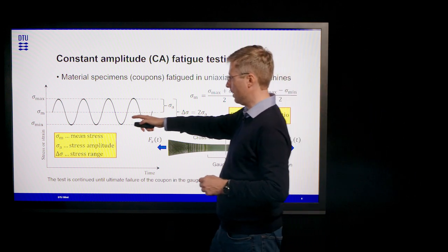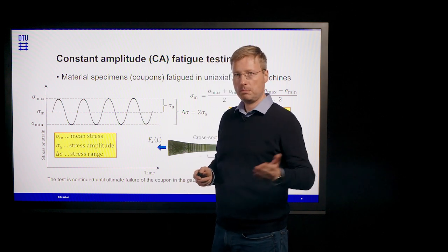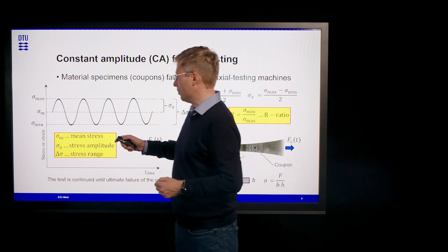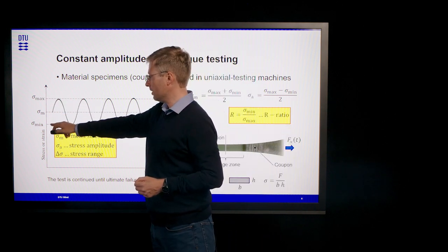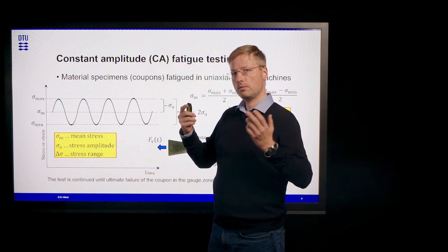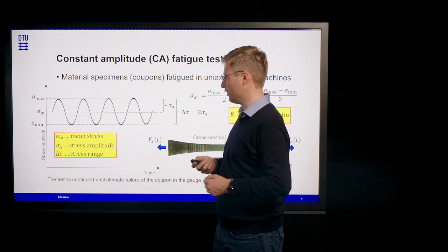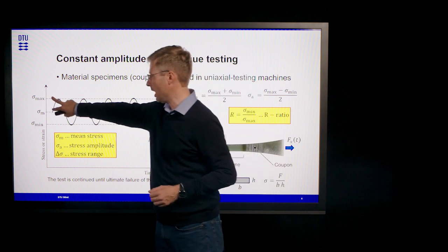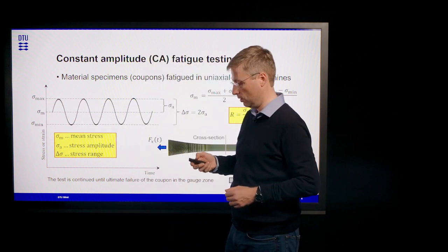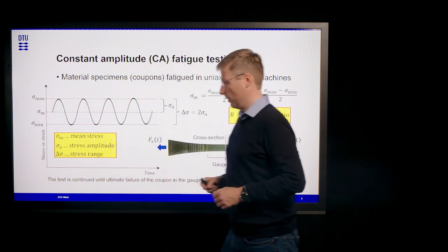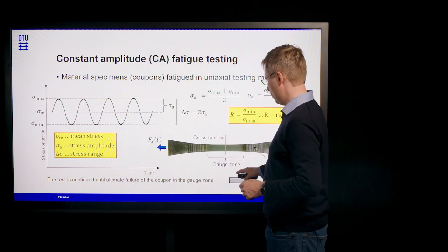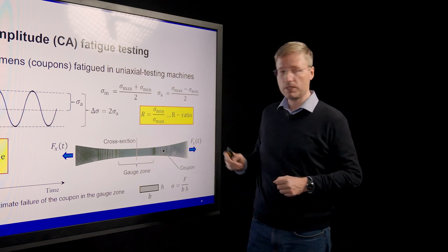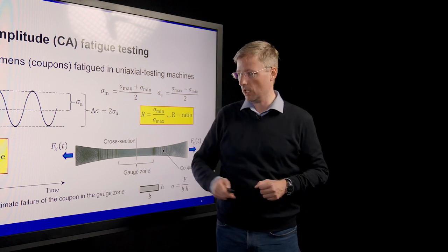We subject the specimen to loading until it breaks. The two variables we are mostly working with when talking about SN curves are the mean stress and the stress amplitude — or twice the amplitude, which is the stress range. Stress in this example refers to the nominal cross-section in the middle of the gauge region of the specimen, meaning it is the force applied by the machine divided by that cross-section area.